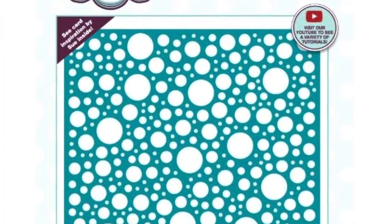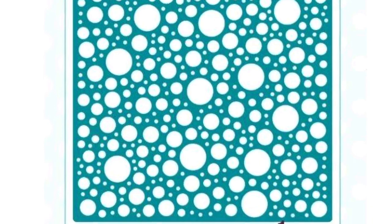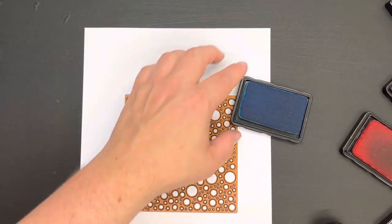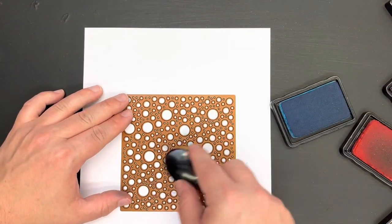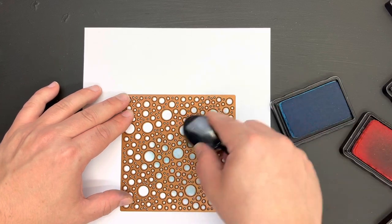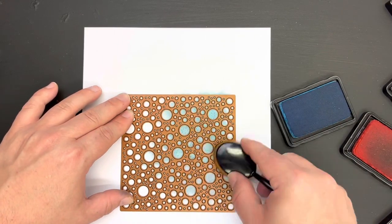Another one of the designs that I like to do this with is this lovely Bubbles background die by Sue Wilson. Now this came out recently as part of our nautical collection and it's again a really nice design to play around with but to be honest there are going to be so many dies you could be using this with throughout your stash.